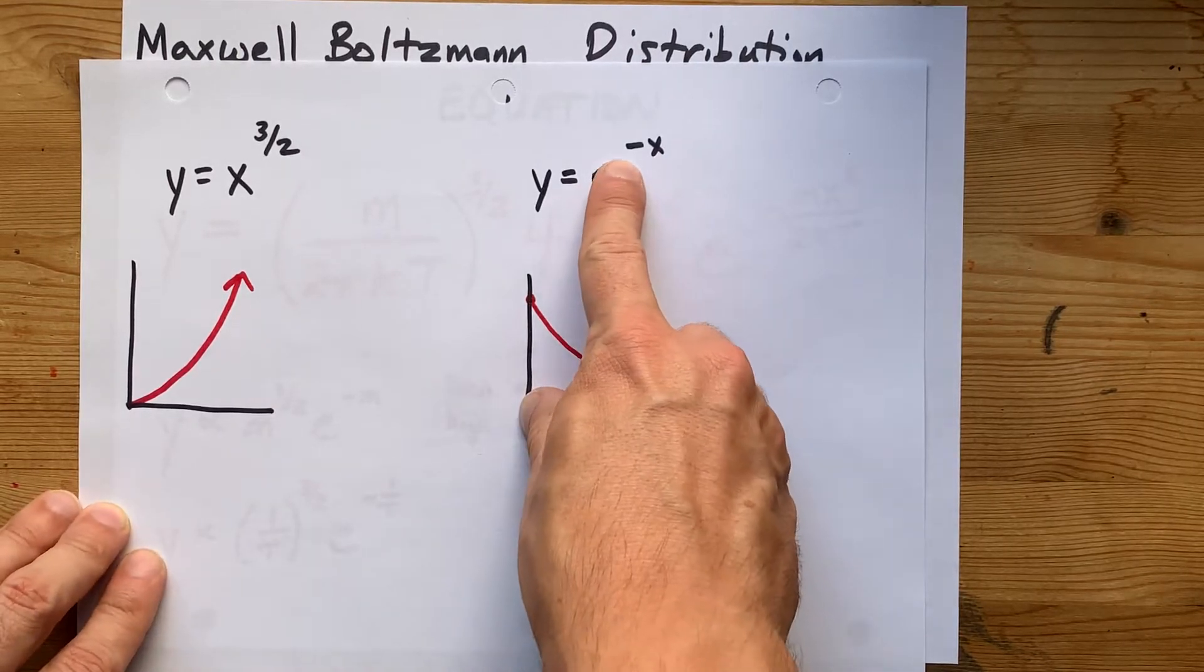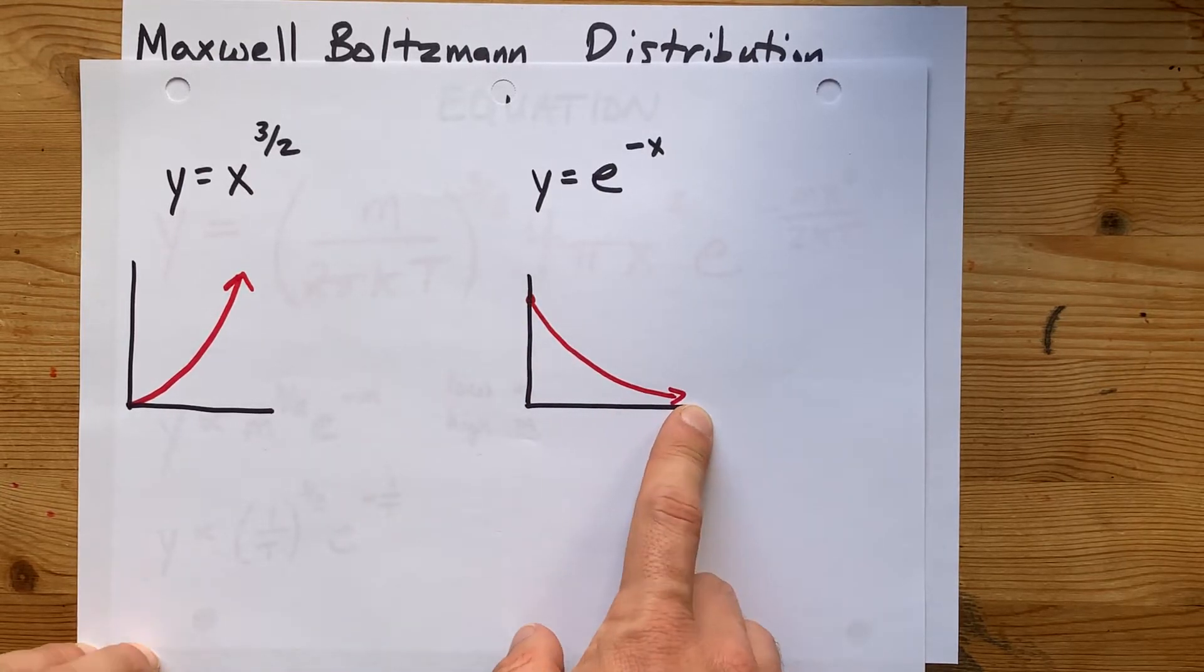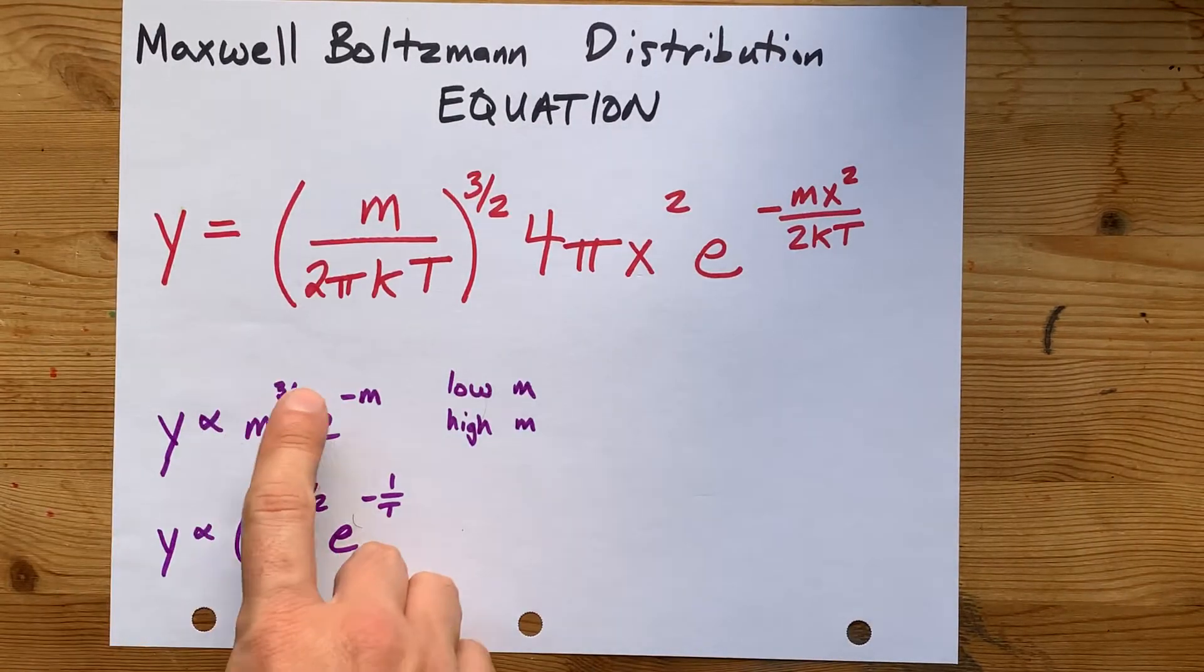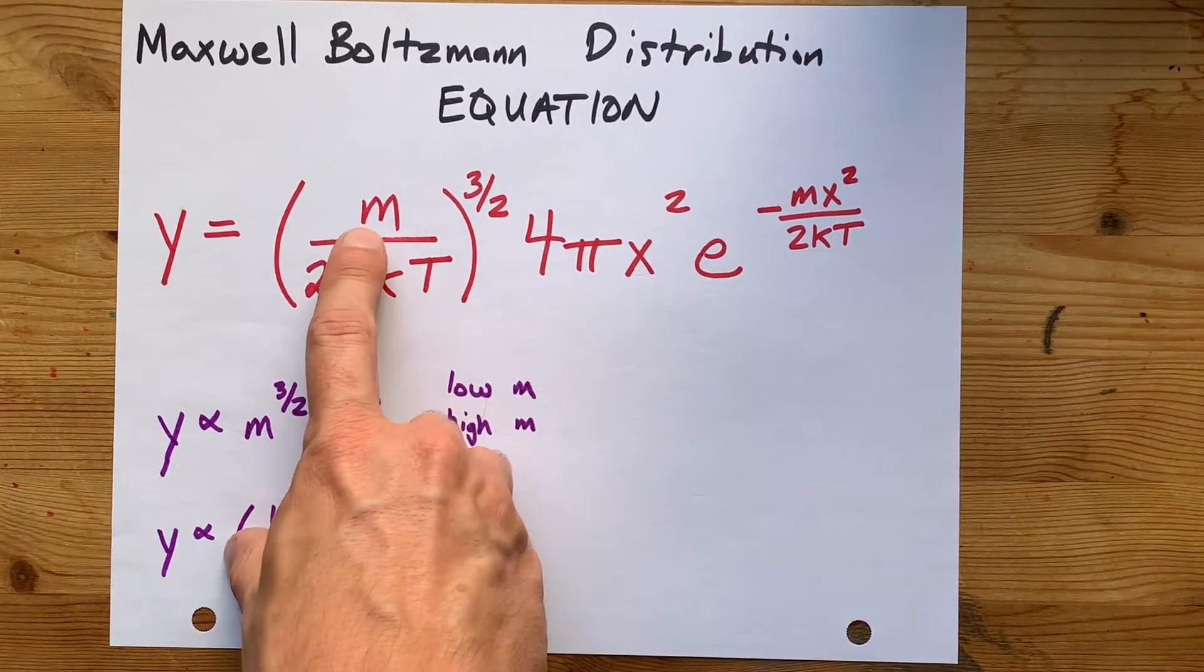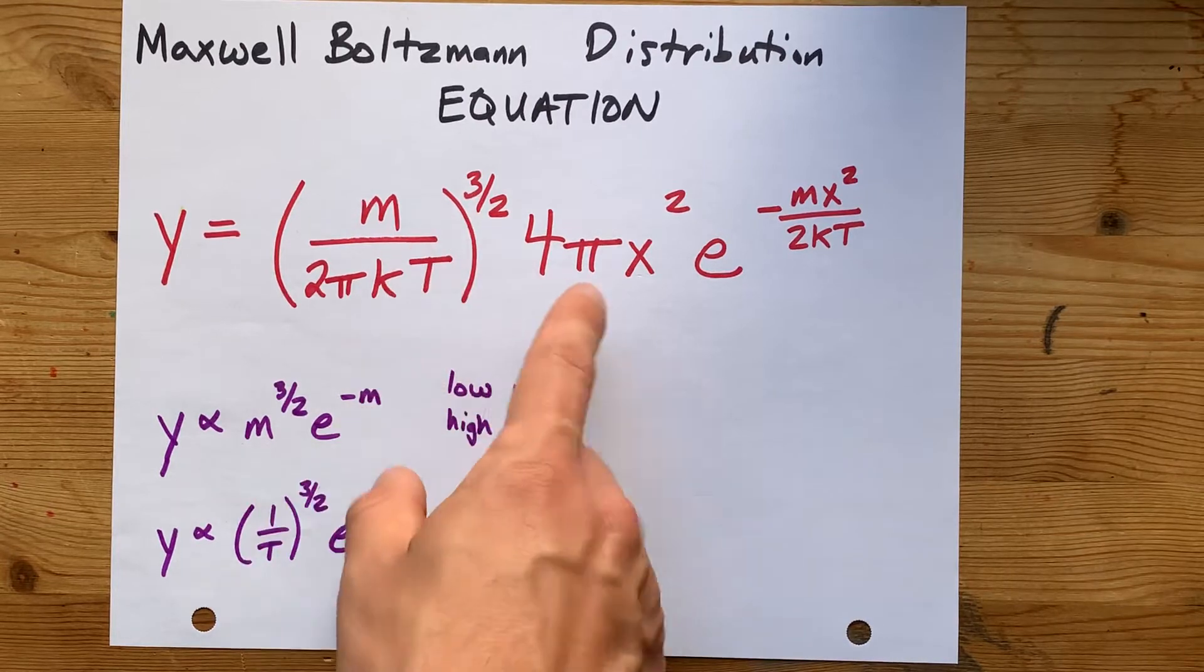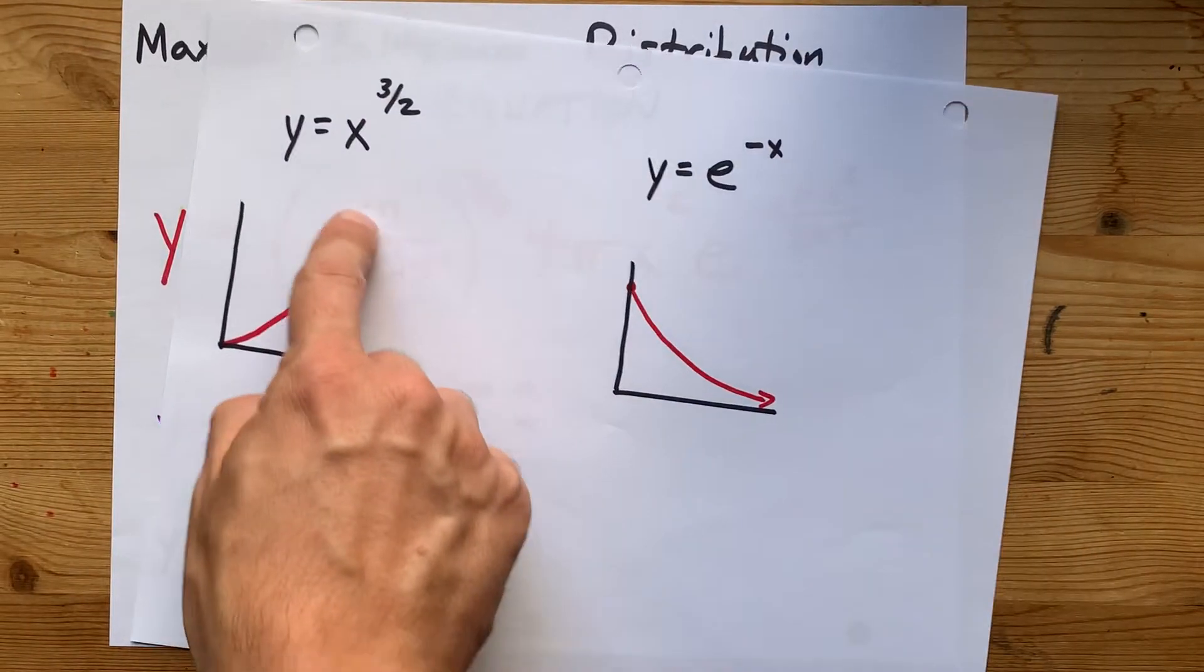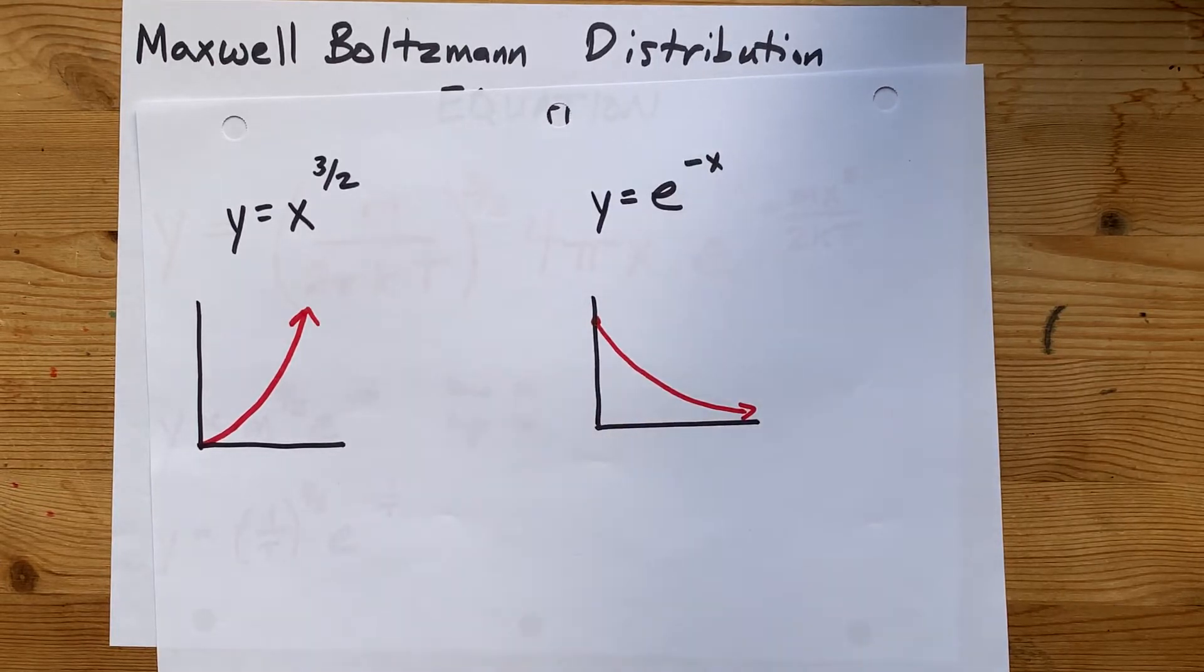E to the power of negative X, or a negative exponent, is exponential decay. And now what I want you to see is that what we're doing to figure out what the probability is, is multiplying some things together. One of them is the particle size to the power of three halves times some stuff times E to the power of negative particle size. So what that means is that we're taking this function and multiplying it by this function and some constants as well.